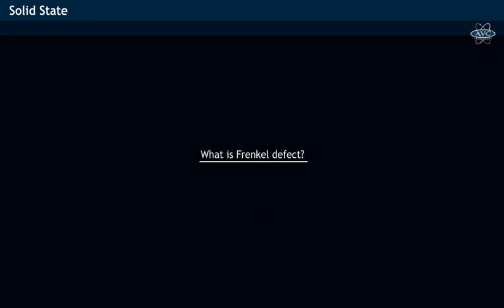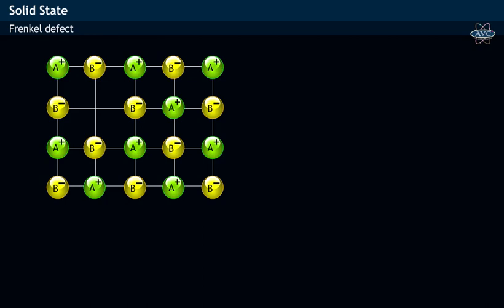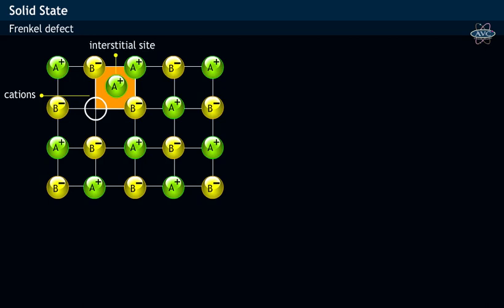What is Frenkel defect? Let us understand Frenkel defect by observing the structure of ionic crystals shown. Let the small ion, namely the cation, say A+, leave its original lattice site and occupy the interstitial site of neighboring ions. This leaving of the cation from its lattice point generates a gap or a hole, and this in turn creates a defect in the ionic crystal which is called the Frenkel defect.